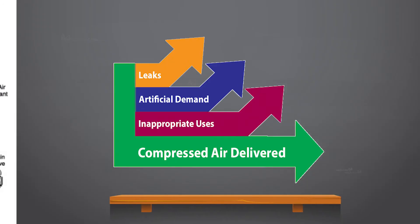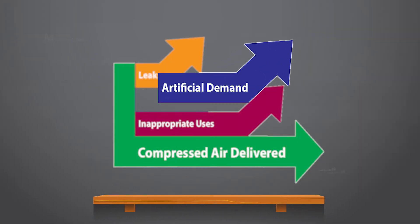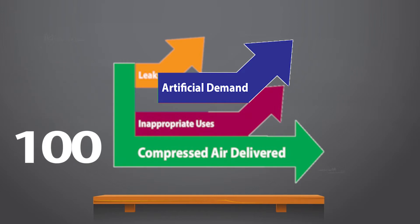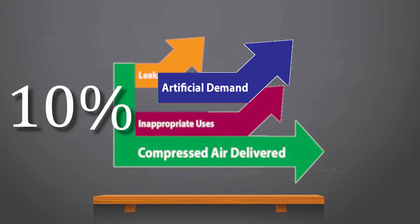Plants often run at a higher pressure than needed. If you lower pressure, compressor power is reduced and unregulated uses consume less air. For example, lowering pressure from 120 psi to 100 psi saves 10% power at the compressor and less air is used.